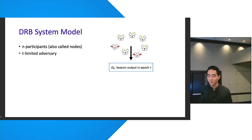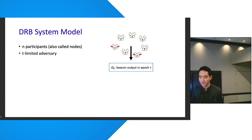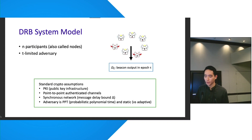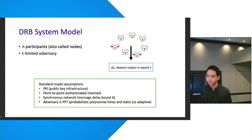In terms of the system model, we consider a general model assuming N participants, also called nodes. We assume a T-limited adversary where up to T out of N nodes are Byzantine, partaking in any arbitrary action, along with standard cryptographic assumptions. Notably, we assume a synchronous network with a known message delay bound delta, and use the notation omega sub tau to denote beacon output at epoch tau.